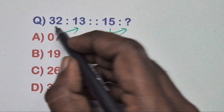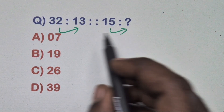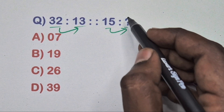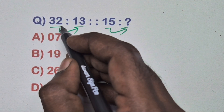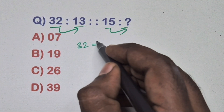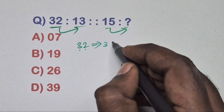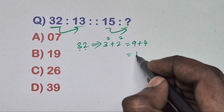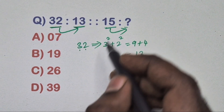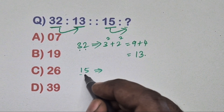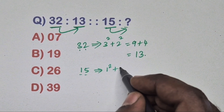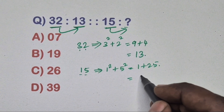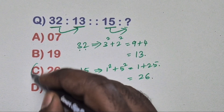Find the relation between this pair of numbers. Take 32: split the digits and square them — 3 squared + 2 squared = 9 + 4 = 13. Same way, take 15: 1 squared + 5 squared = 1 + 25 = 26. So the option is the correct answer.